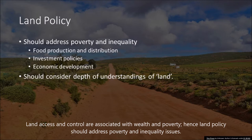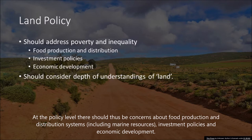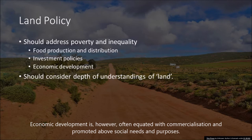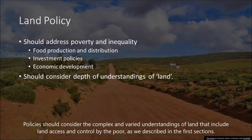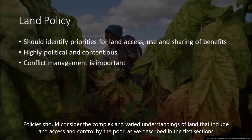At the policy level there should be concerns about food production and distribution systems, including marine resources, investment policies and economic development. Economic development is, however, often equated with commercialization and promoted above social needs and purposes. Policies should consider the complex and varied understanding of land that includes access and control by the poor, as we discussed in the first session.